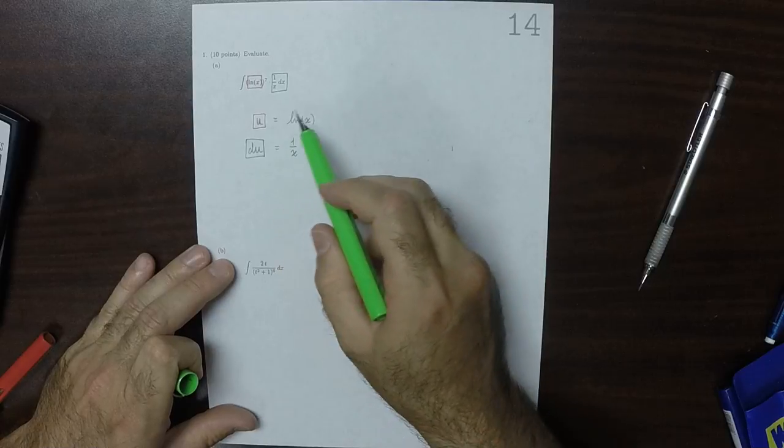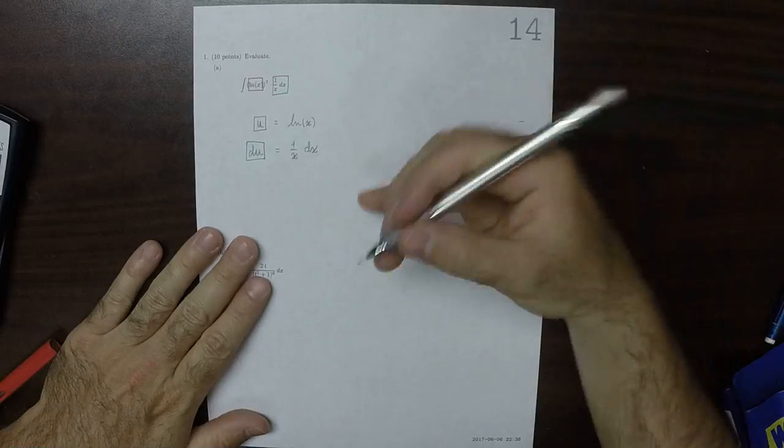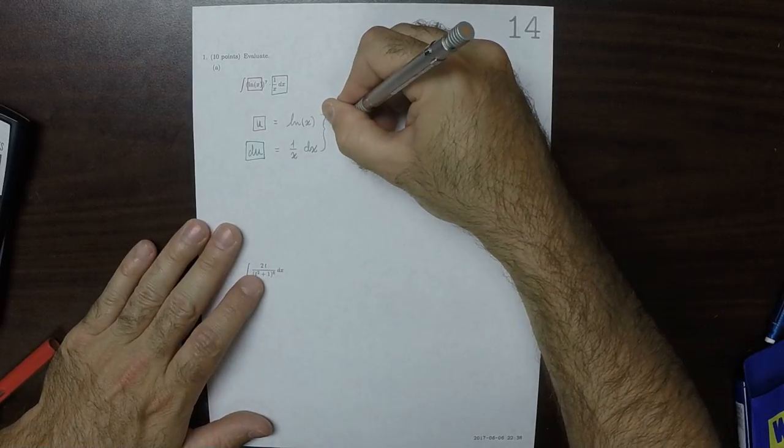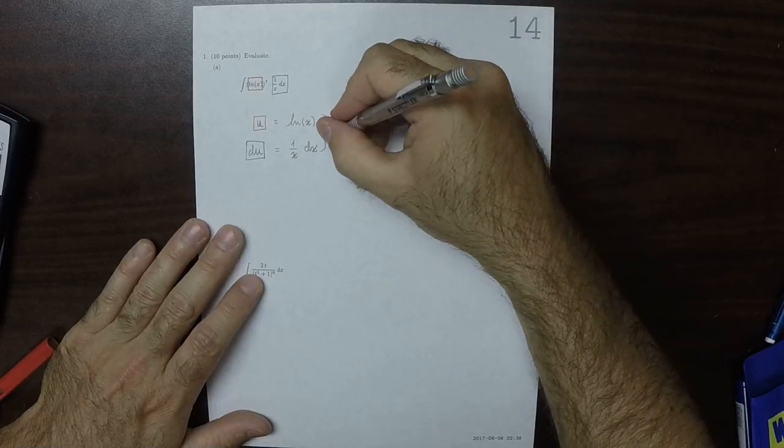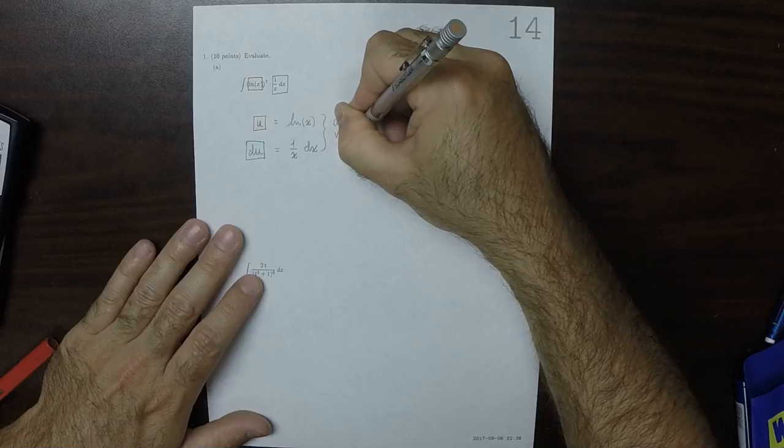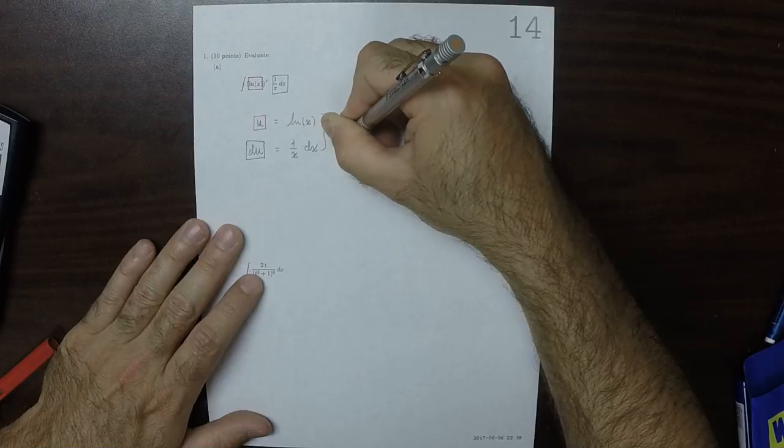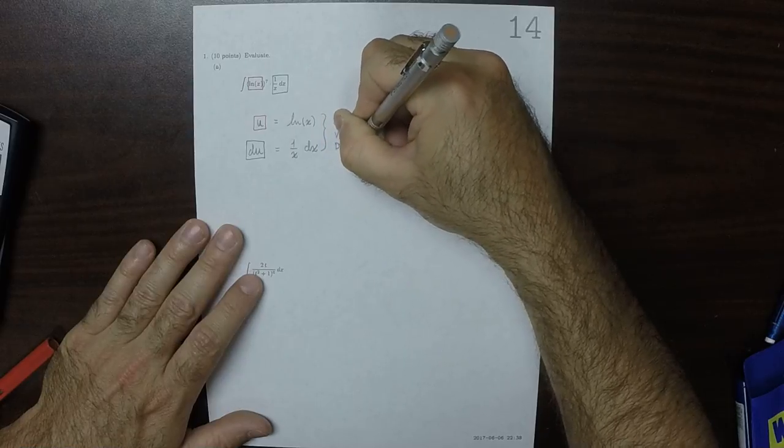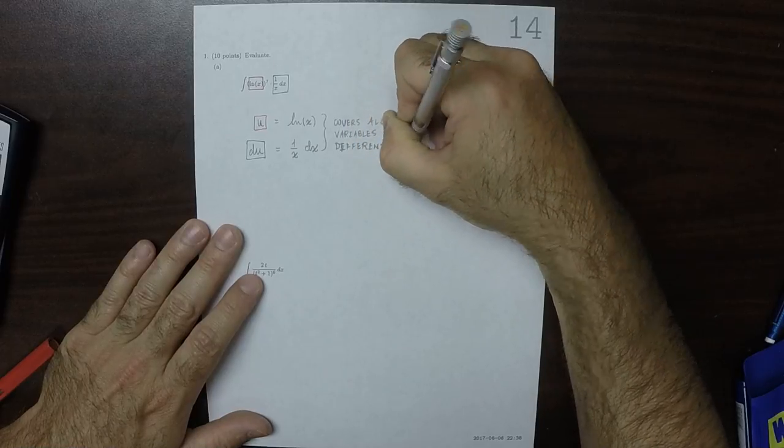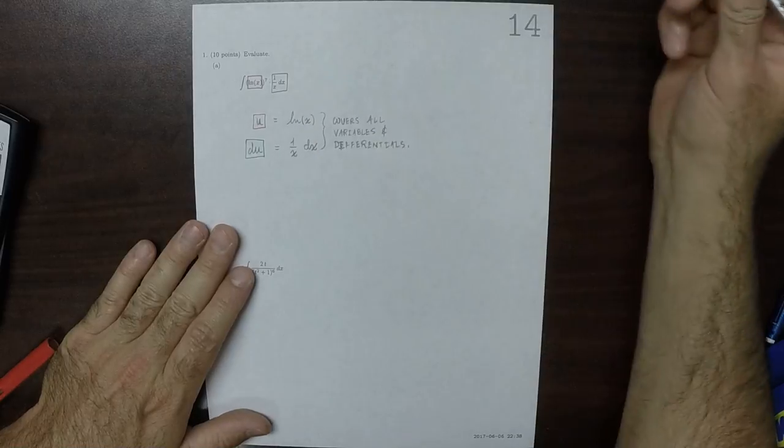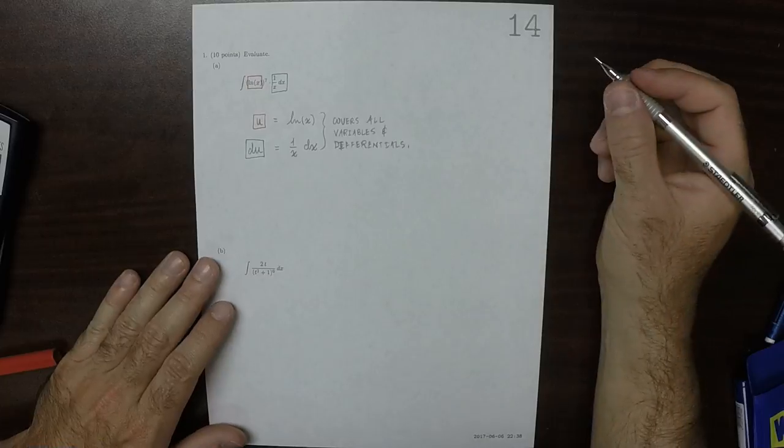So between the red and the green, this covers all variables and differentials. The 7 isn't covered, but the 7 is a constant, so that doesn't matter because it's not a variable or a differential.